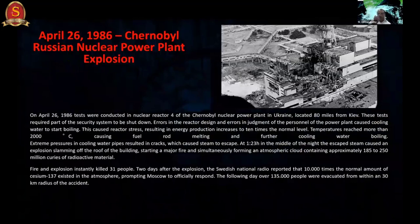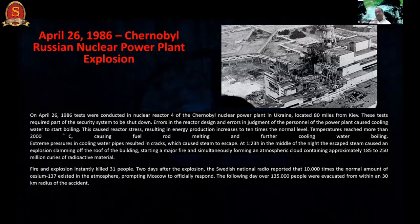On April 26, 1986, the Chernobyl nuclear explosion in Russia occurred in the middle of the night when the reactor failed. Around 185 to 250 million curies of radioactive material were released. It killed 31 people instantly, and Swedish national radio reported 10,000 times the normal amount of radioactive material in the atmosphere. Following this, around 1 lakh 35,000 people were evacuated.